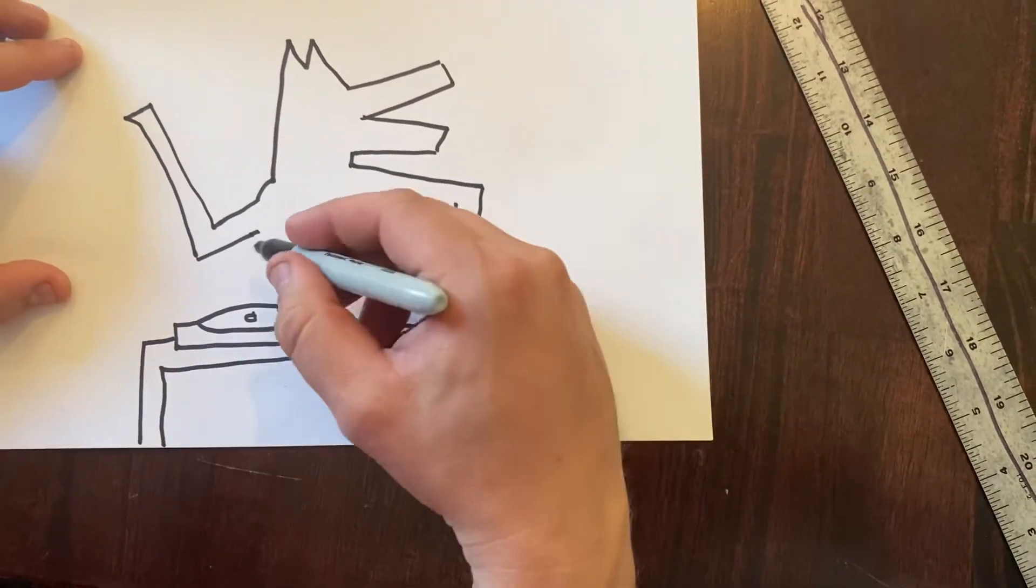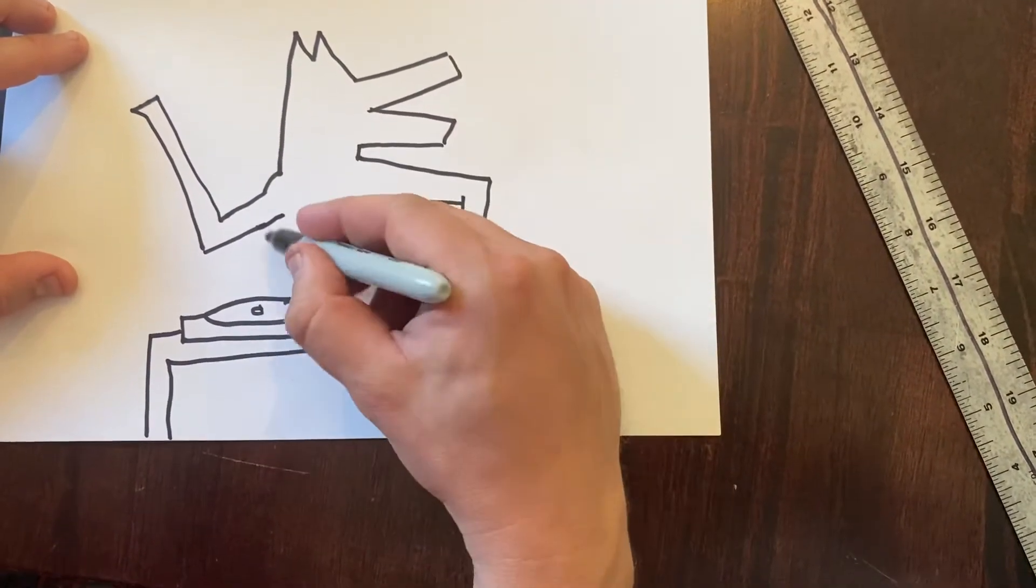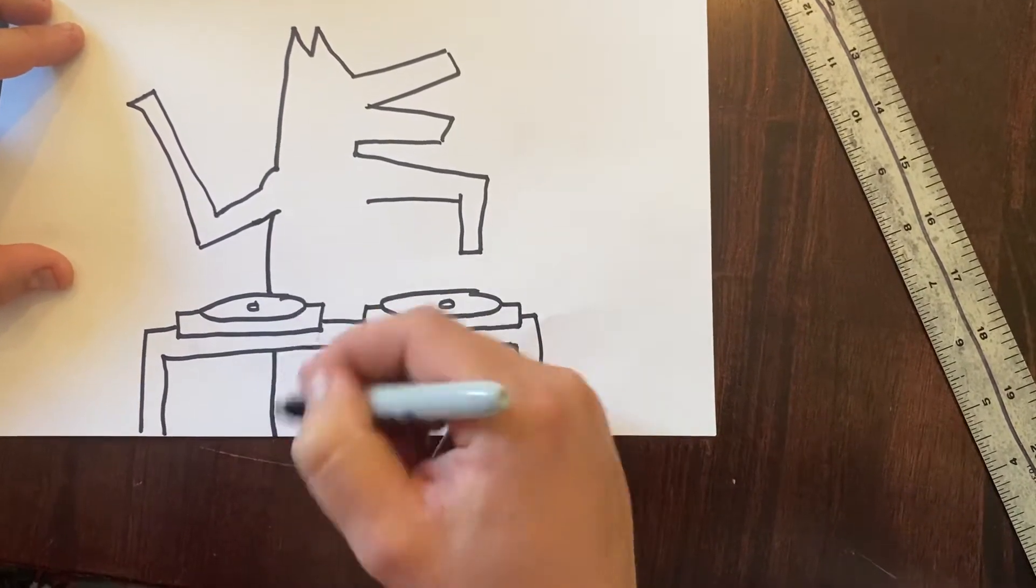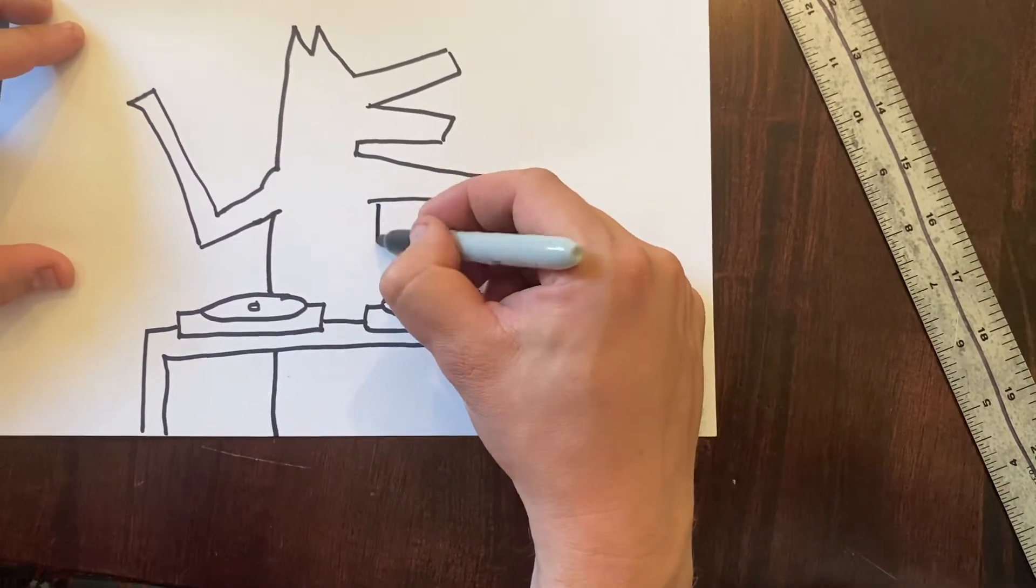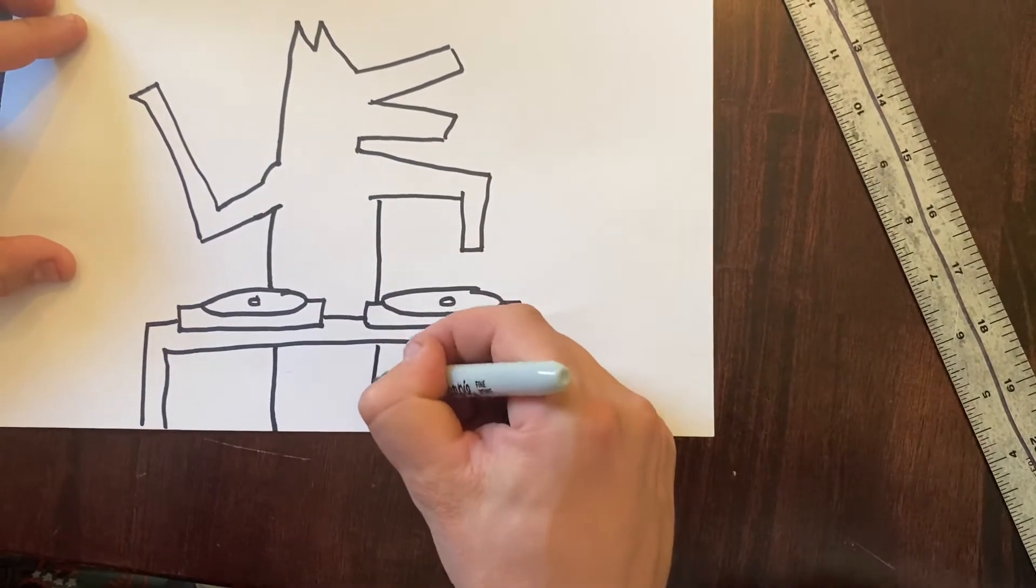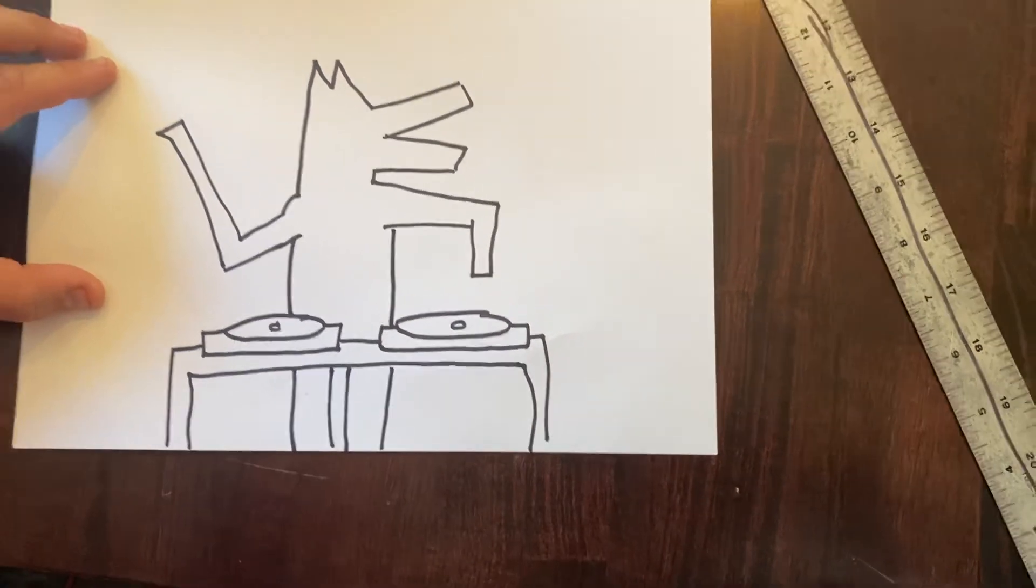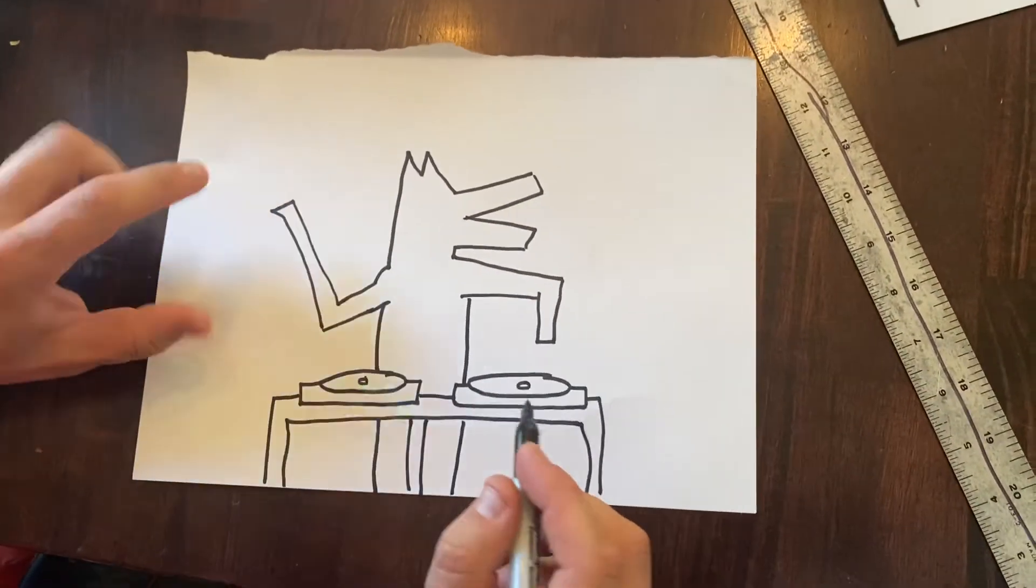All right, time to finish up the body. We're going to come back over here, make the lines come down, try and follow that line down a little bit. Have this one come over here, turn these into legs.